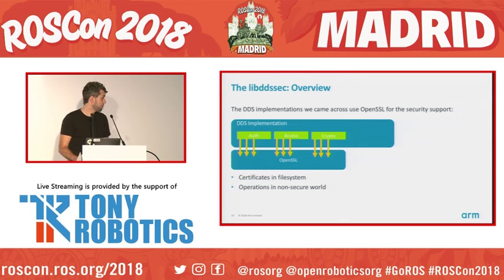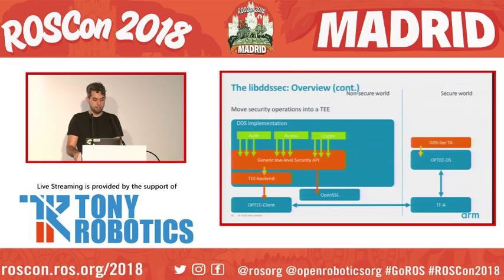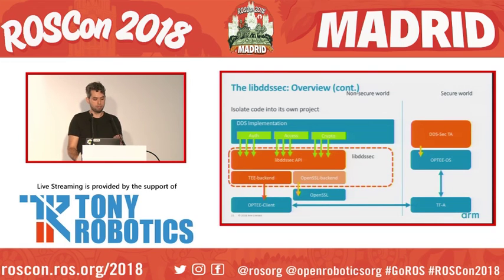This is a typical implementation of DDS. We are using FastRTPS as our environment for testing, and usually they use another library like OpenSSL, and all the certificates and configurations are in the non-secure world. Our first proof-of-concept removed the OpenSSL layer, and we created our own API with a back-end that invokes the trusted application — all execution happens in that TA. That was the initial proof-of-concept, and now it's becoming a proper library outside the DDS implementation.